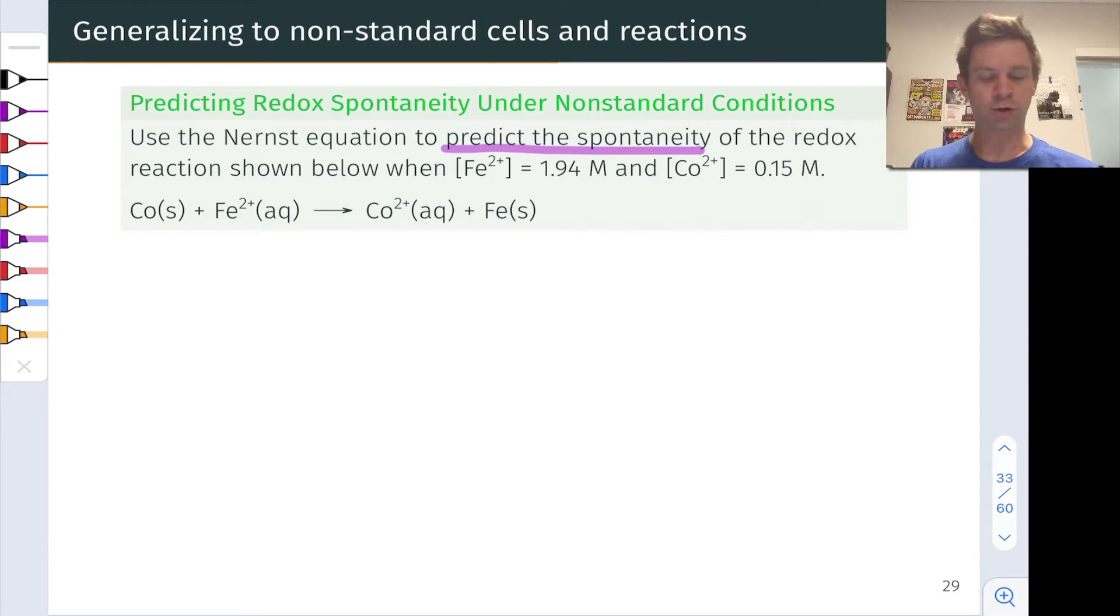Here we can see that cobalt is going from cobalt 0 to cobalt 2+, and so it's losing two electrons and the iron is gaining two electrons. So two electrons are transferred in each reaction event for this redox reaction. We're going to use that later, and it's a value we've already incorporated into the Nernst equation.